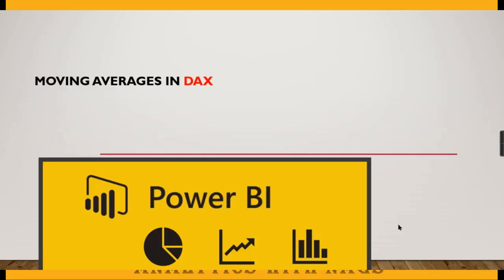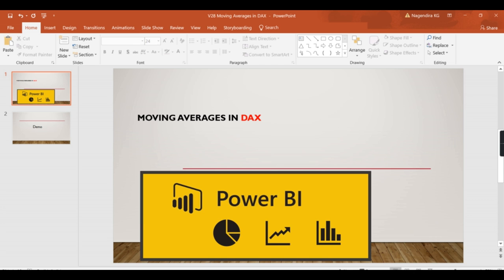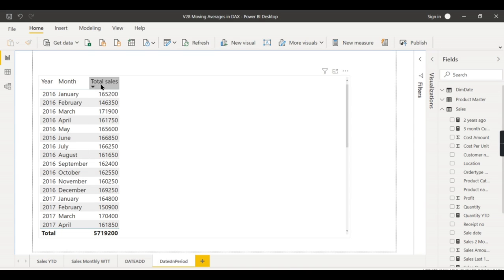Welcome to Analytics with Nags. In this video we are going to see what moving averages are. Basically, moving average is when you have continuous data and you want to sum up and divide by a particular period — say three months moving average, two months moving average, or weekly moving average. You want to compute and display it against your total sales. Let us jump into a demo. If you're new to this channel, hit the subscribe button right now to learn concepts in Power BI and DAX.